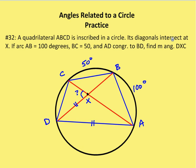I've drawn out the figure. You have a circle with two chords, AC and BD, intersecting at point X. I need to identify what the measure of CXD is. In order to do that, I need to figure out what arc measure CD is. We're working towards the equation: X equals one-half the sum of the measure of arc CD plus the measure of arc AB.